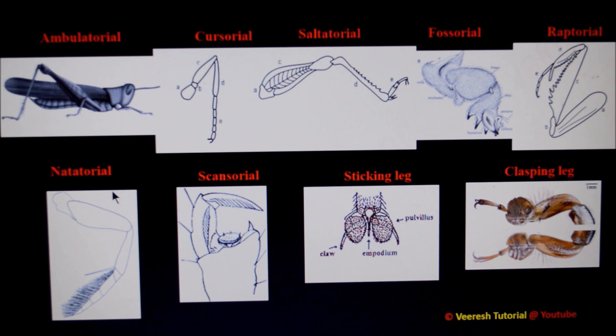The next type is natatorial legs, suited for swimming purpose. The hind legs of water bugs and water beetles are modified into natatorial type. Here, the first four tarsomeres are provided with long hydrophage hairs, which act like oars and are useful in swimming.